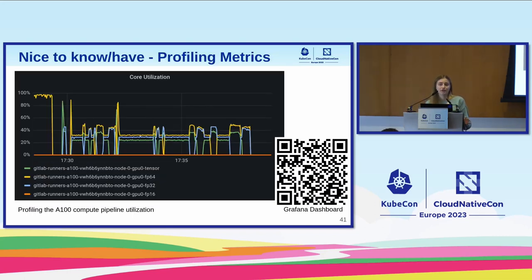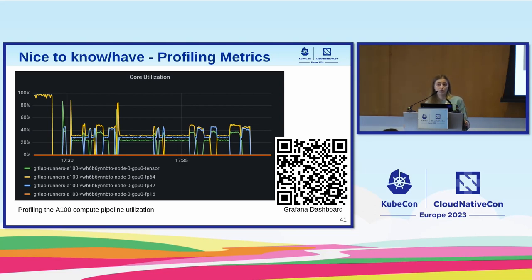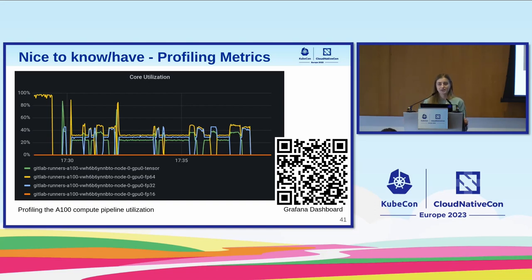Something we didn't mention much but is very useful: monitoring different pipeline utilization. We can see if tensor cores are being utilized, and whether floating point 16 or 32 operations are being used. This helps us understand what kind of jobs our users are running on the GPUs. A100 and H100 come with tensor cores, which are a big part of what makes them expensive. If you see in the graph that tensor cores are not utilized, you want to address that. Everything you saw is something we use for our GPU monitoring — check the QR code link because some of this took us a long time to figure out.